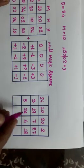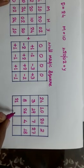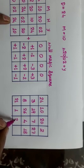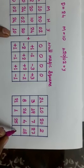20 plus 1, 21. 2 minus 1, 1. 24 plus 1, 25. And 10 minus 1, 9.